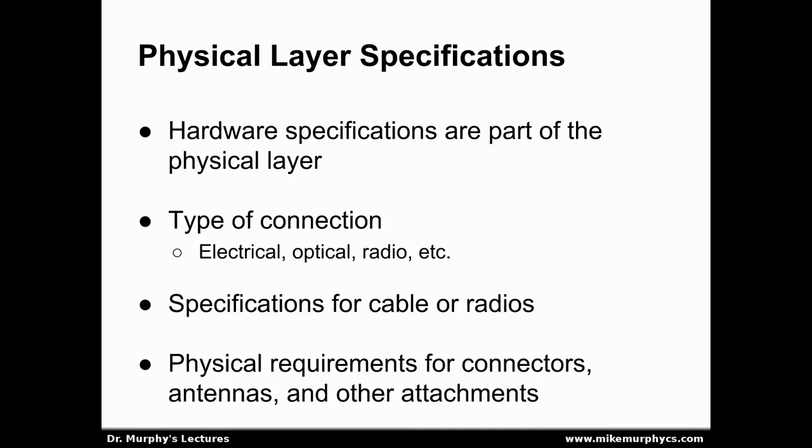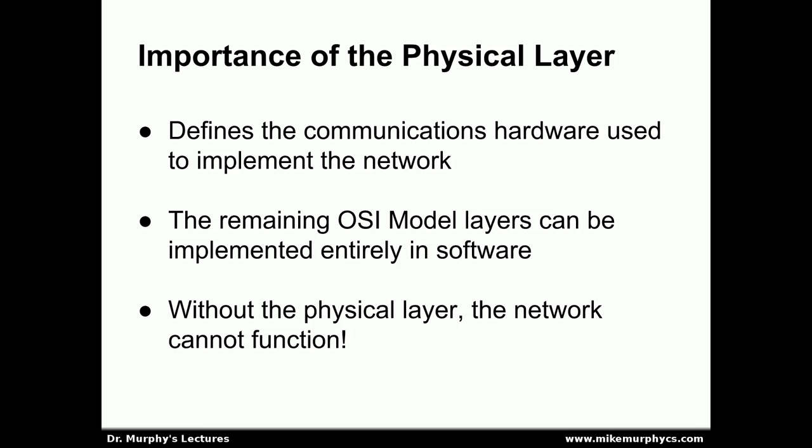For example, with wired Ethernet we have a standard 8-pin plug that we can utilize to attach different devices to the cable. If we didn't have standard attachments, it would be extremely difficult and relatively expensive to connect different devices together. So this layer is highly important. It could be argued, in fact, that the physical layer is the most important layer of any networking system, simply because none of the other layers work without it.